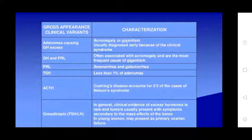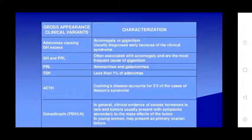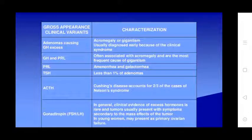Clinical variants include adenomas causing excess GH, PRL, and TSH (chronotrophic hormones). Acromegaly is usually diagnosed early because of the associated clinical syndrome. Growth hormone-secreting adenomas are the most frequent cause of gigantism and acromegaly. Prolactin-secreting adenomas cause amenorrhea and galactorrhea. Less than 1% of adenomas causing Cushing's disease account for two-thirds of cases of Nelson syndrome.